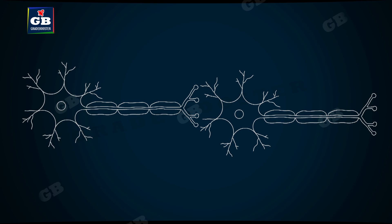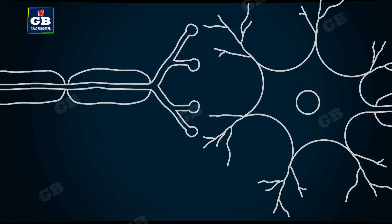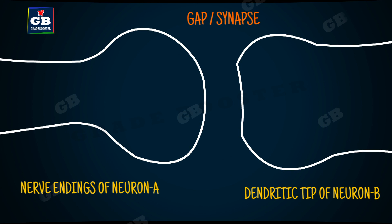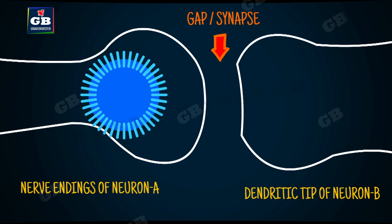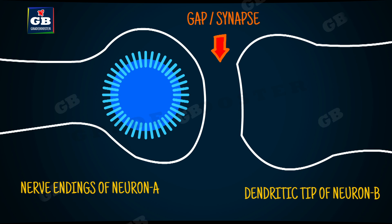The nerve endings are not directly connected to the other neuron because there is some gap between one nerve cell and the next. This gap or junction is called a synapse. If the neurons are not connected to one another, then how do the electrical impulses pass from one neuron to another? At the nerve endings, the electrical impulse triggers the release of some chemicals.